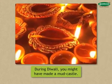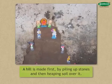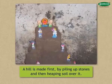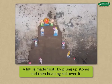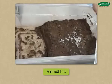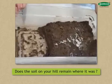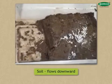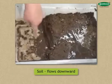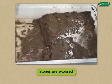During Diwali, you might have made a mud castle. Sometimes a hill is made first by piling up stones and then heaping soil over it. Make a small hill like the one described above and water the hill with a watering can. Does the soil on your hill remain where it was? The soil on the hill flows downwards with the water and the stones underneath are exposed.